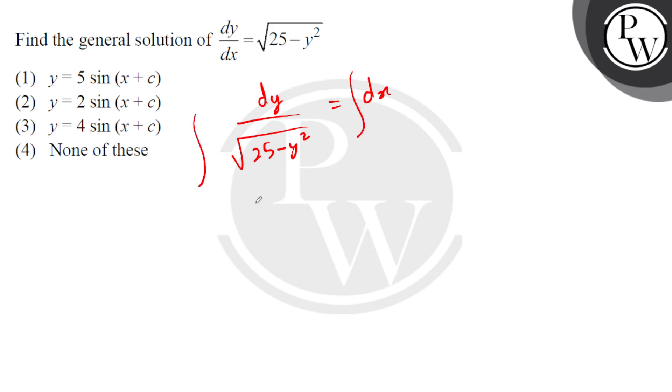So this is our sin inverse: sin⁻¹(y/5) = x + c. So here we say y/5 = sin(x + c).